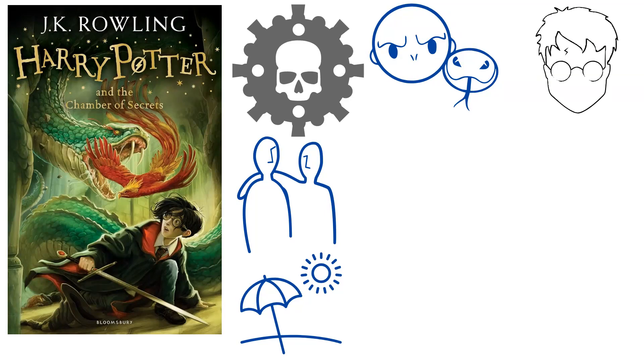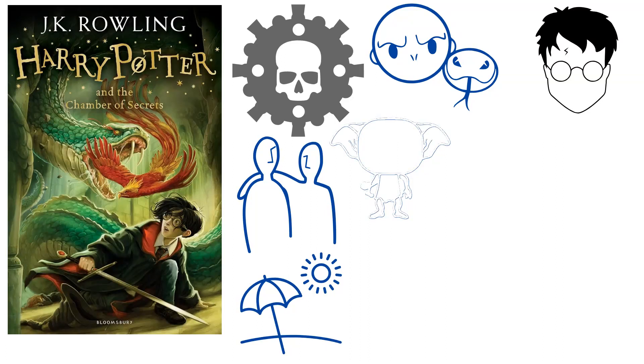The Dursleys loathe magic and are enraged when Harry receives a visit from a magical elf called Dobby, who advises Harry not to return to Hogwarts, spoiling their dinner party with some of Mr. Dursley's clients.